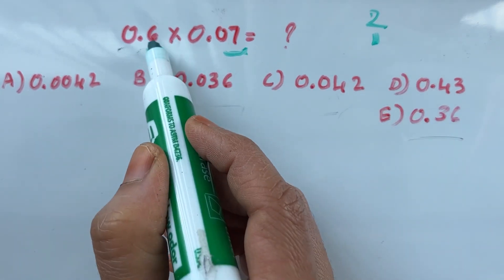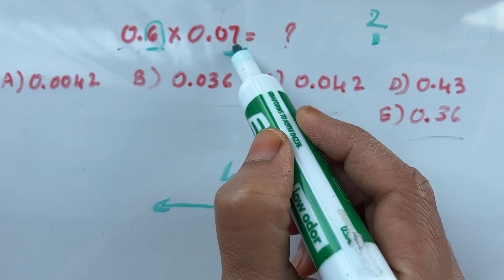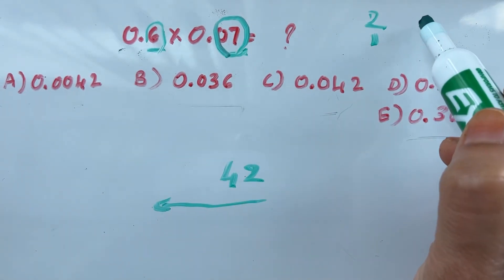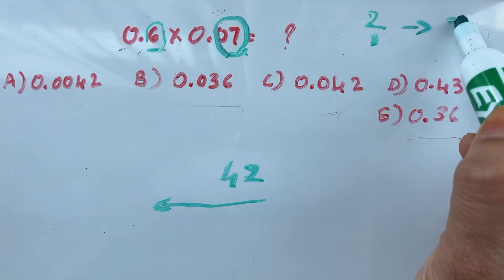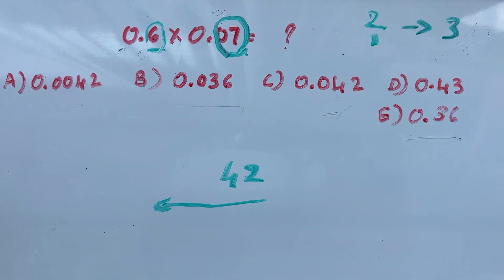So this is one, and here two, so total three. Total three digits. Now you have already two digits, 42, so you need three digits. The third goes here, which is...